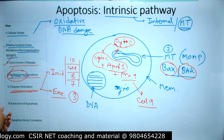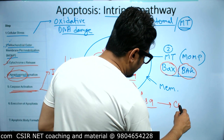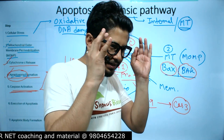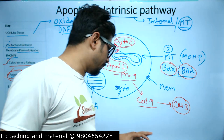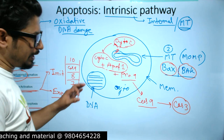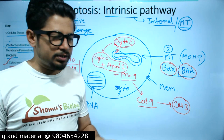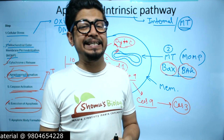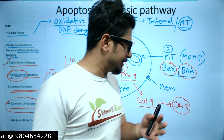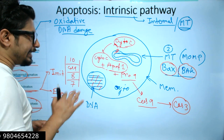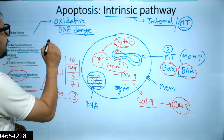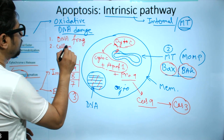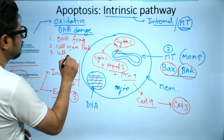Caspase cascade or caspase activation means caspase-9 is going to activate caspase-3. Once caspase-3 is active, it is ready to elicit the cellular response of apoptosis — it will execute the process of apoptosis. Caspase-3 is going to activate DNases which will break down and degrade the DNA in the cell, causing DNA fragmentation. Three important characteristics of any apoptosis pathway are: DNA fragmentation, cell membrane blebbing, and cellular shrinkage.